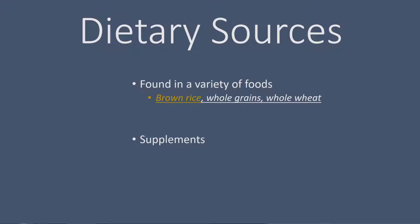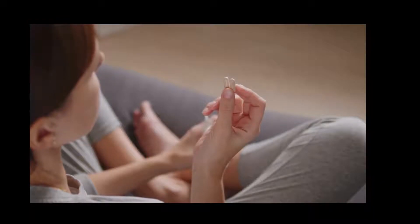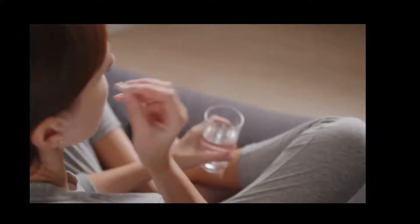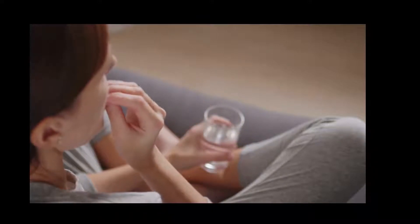There is a lot of thiamine in the husks and in brown rice, so technically someone who only eats polished white rice could be at risk for thiamine deficiency. Nowadays there are also many thiamine supplements available for those who want to up their thiamine game.